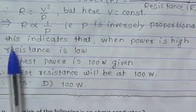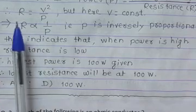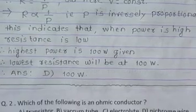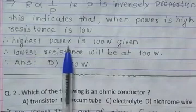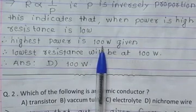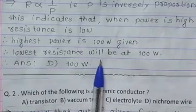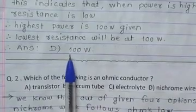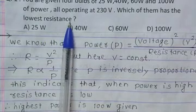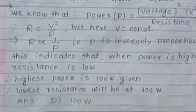This indicates that when power is high, resistance is low. When power is low, resistance is high. So highest power will have lowest resistance. The answer is D, 100 watt.